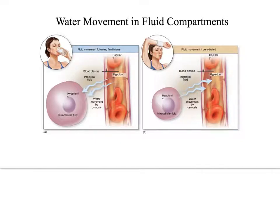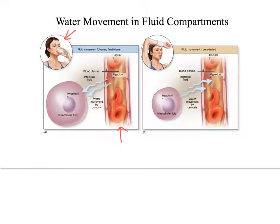How does water move within the compartments? When you drink, water goes into the digestive system, then moves to the blood, then to the fluid outside the blood, and then into the cell. So when we're drinking, we're moving water from the blood to the cells — we're hydrating the cells.